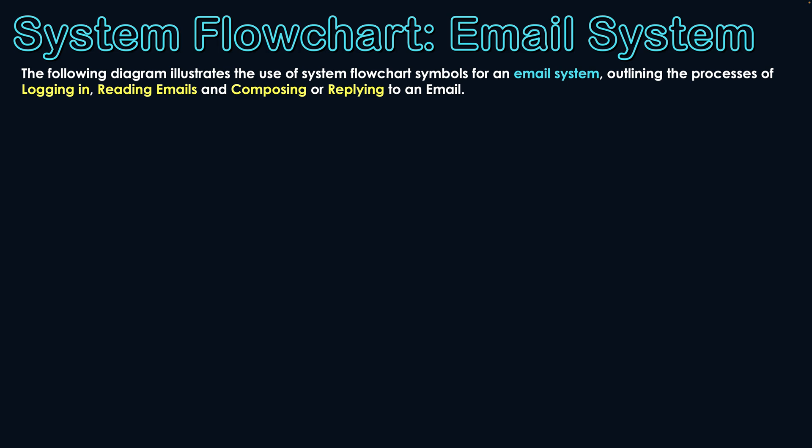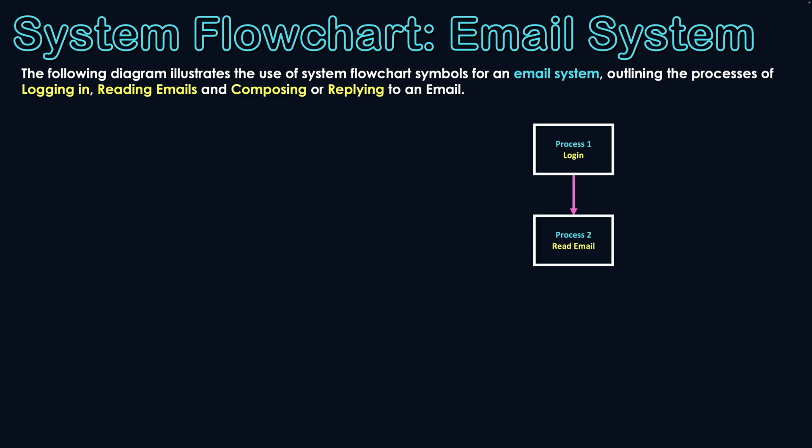I'm going to start with my processes. The first step would be you log into the system. From logging into the email system, you can then read your emails. And then once you've read your emails, you can compose a new email or reply to a message. Those are the foundation for this diagram.